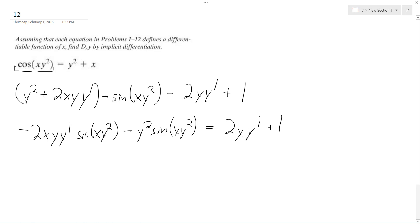Okay, so I'm going to get the y primes on the same side, so I get negative 2xy y prime, sine xy squared, minus 2y y prime, and then I get y squared, sine xy squared, plus 1.